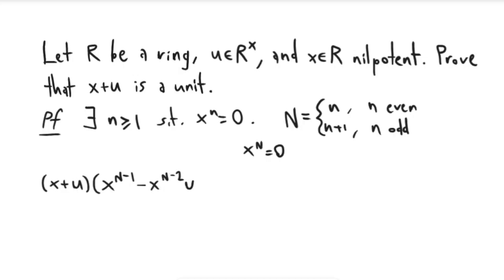And this is going to end with minus, we'll have x u to the big n minus 2 plus u to the big n minus 1.